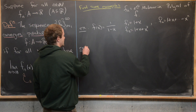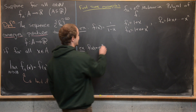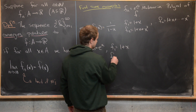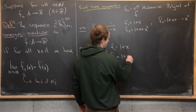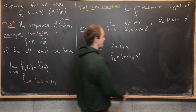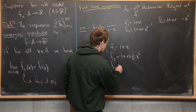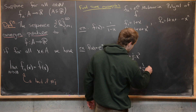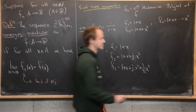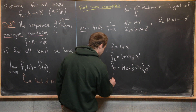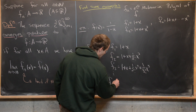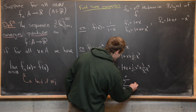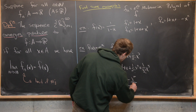Another example: let's take f(x) equal to e to the x. Here we could have f_1 = 1 + x, f_2 = 1 + x + x²/2!, f_3 = 1 + x + x²/2! + x³/3!, and so on. So f_n(x) equals the sum from m = 0 to n of x^m over m factorial.